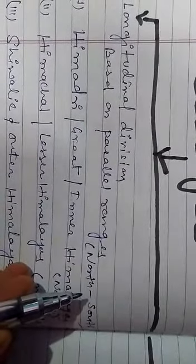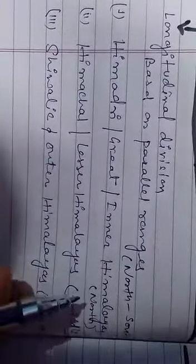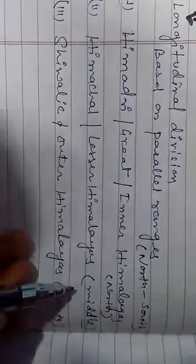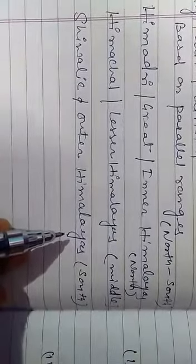The longitudinal division of Himalayas based on parallel ranges is a north-to-south division. The parallel ranges are: Himadri, also known as Great Himalayas or Inner Himalayas, which is the northernmost range. South of Himadri is Himachal, also known as Lesser Himalayas, the middle range. South of Himachal is Shivalik, also known as Outer Himalayas, the southernmost range.